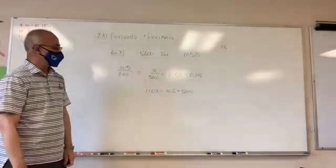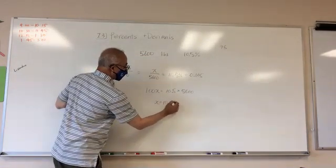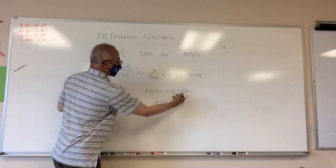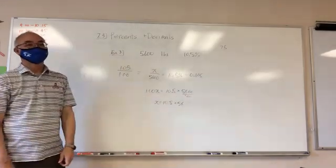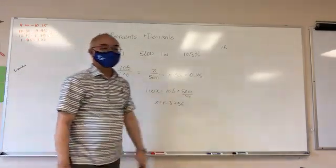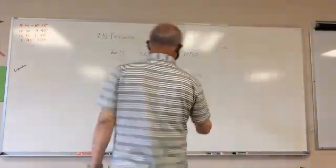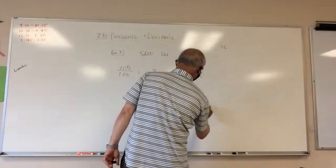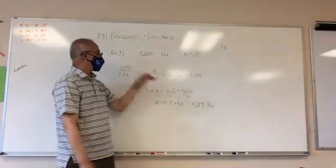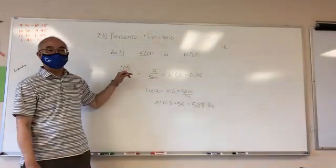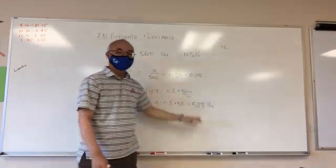I divide both sides by 100. X is equal to 10.5 times 56. So I divide this guy by 100. It's basically 56. We're on the math there. And we do that, I am supposed to get 588. 588 pounds, about 1/10. 10.5 percent is about 1/10, because 1/10 would have been 560 pounds. 588 pounds.